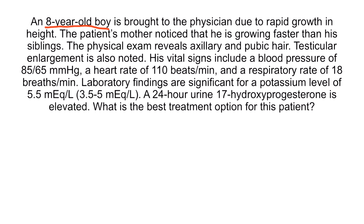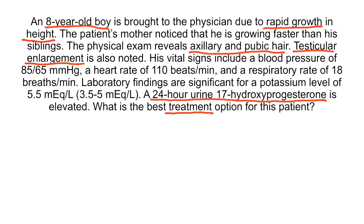An 8-year-old boy is brought to the physician due to rapid growth in height. The physical exam reveals axillary and pubic hair, and testicular enlargement is also noted. His blood pressure is 85 over 65 mmHg, heart rate is 110 beats per minute, and respiratory rate is 18 breaths per minute. Laboratory findings are significant for a potassium level of 5.5, and 24-hour urine 17-hydroxyprogesterone is elevated. These secondary sex characteristics in a boy less than 9 years of age suggest precocious puberty. This patient also has hypotension and hyperkalemia, as well as elevated 24-hour urine 17-hydroxyprogesterone, all consistent with non-classic congenital adrenal hyperplasia due to 21-hydroxylase deficiency. The treatment is cortisol supplementation, which will negatively feed back on ACTH and decrease adrenal androgen production.